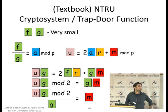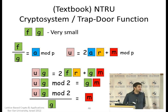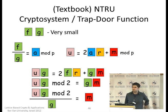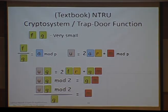If you can solve LWE you can solve worst-case lattice problems, and if you can solve those you can solve subset sum — but you get a worse reduction than directly from the cryptosystem.